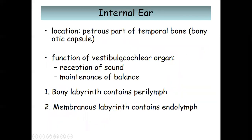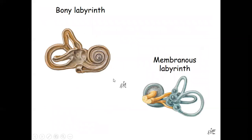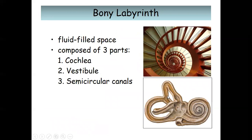Now proceeding with the internal ear. It is located at the petrous part of the temporal bone, also known as the bony otic capsule. The internal ear has two functions: the vestibular cochlear organ for reception of sound, and maintenance of balance. The bony labyrinth contains perilymph fluid, and inside is the membranous labyrinth. The bony labyrinth is composed of the cochlea, the vestibule, and the semicircular canals.